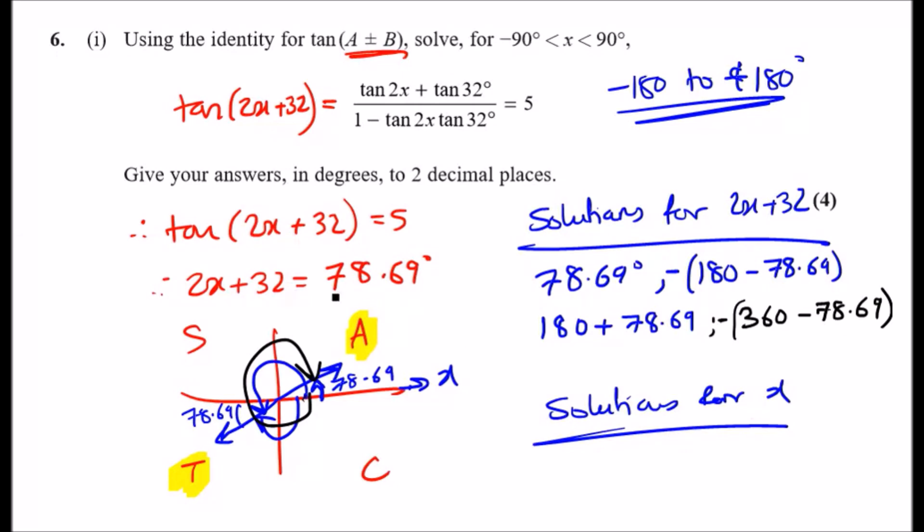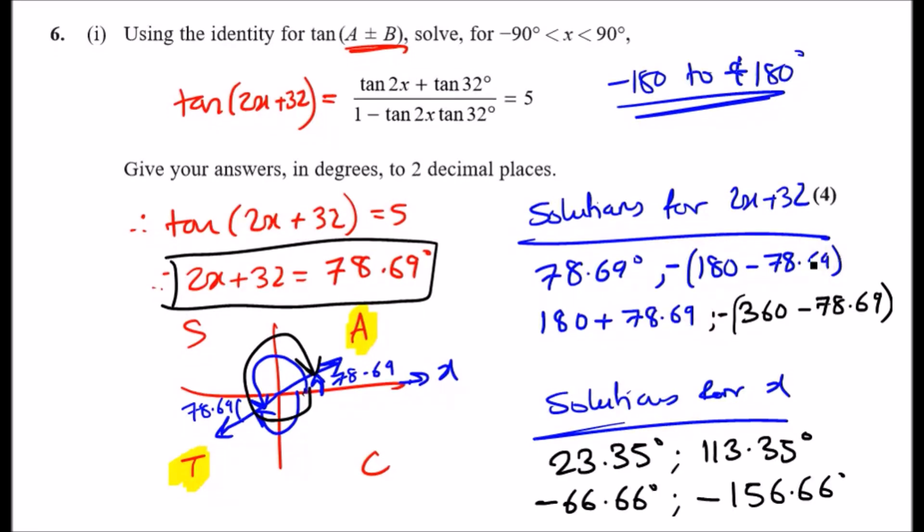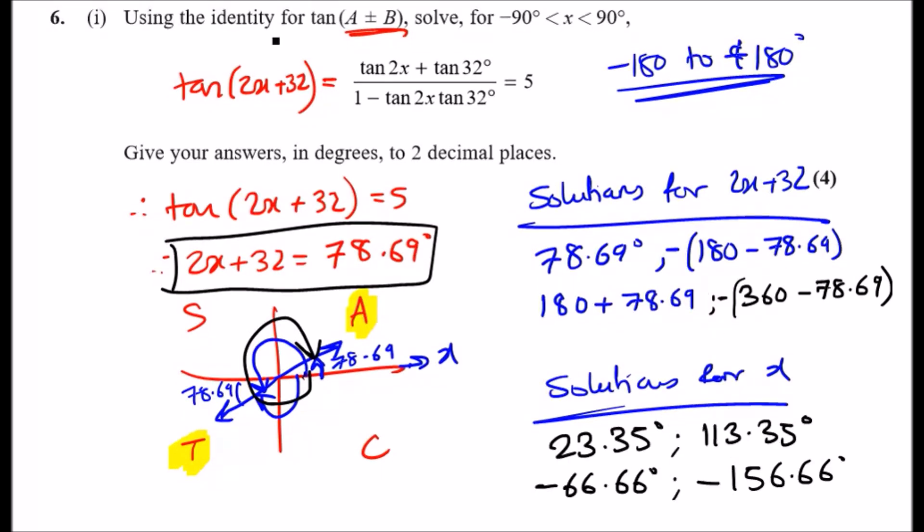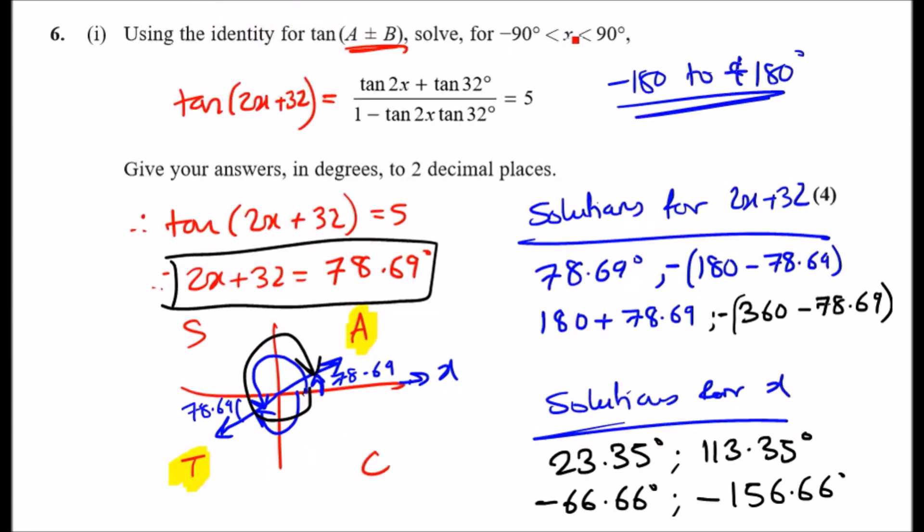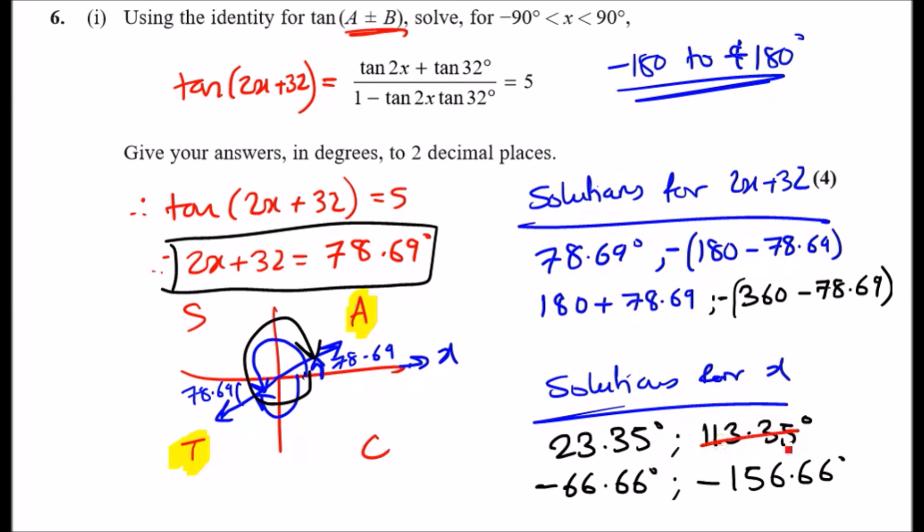To solve the rest, look back at the original equation. For every single solution, subtract 32 and divide by 2. When you do that for every one, you should have the following. Just looking carefully at the interval, x has to be between -90° and 90°. Cross out the ones outside, like 113 and 156. These should be the two solutions.